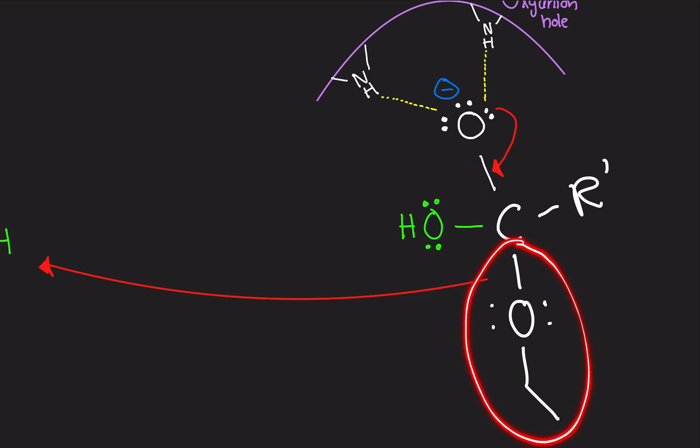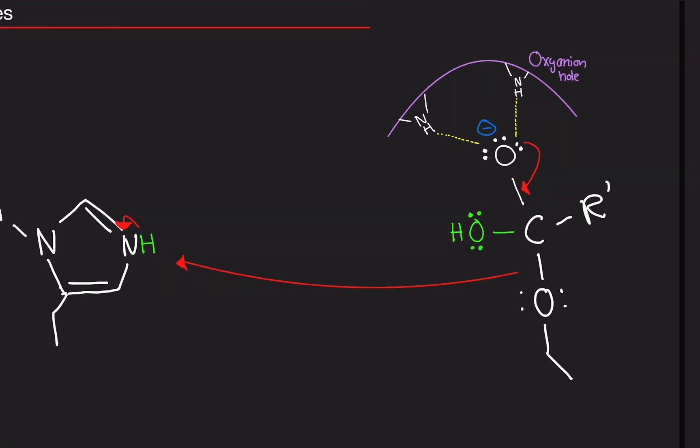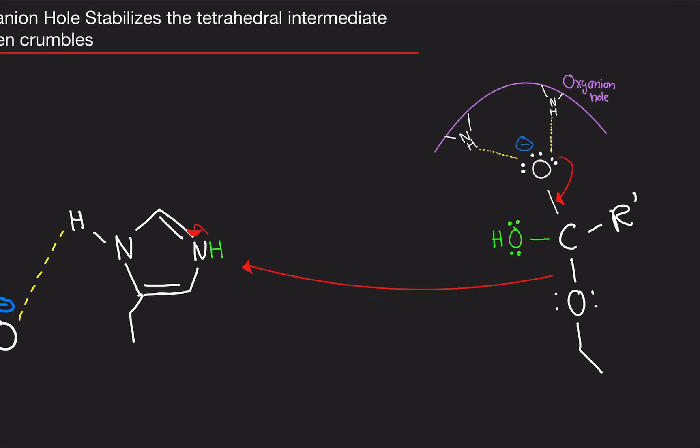Well, what's going to happen is this serine molecule is going to leave. And what's basically going to happen is the alkoxide, this is the alkoxide right here, is going to join in with the histidine. So it's going to separate. So this is going to separate.